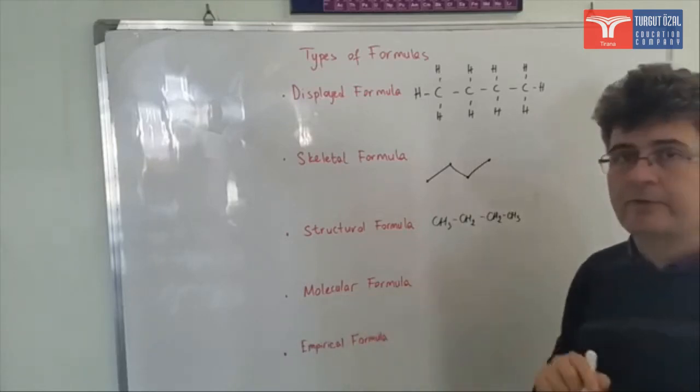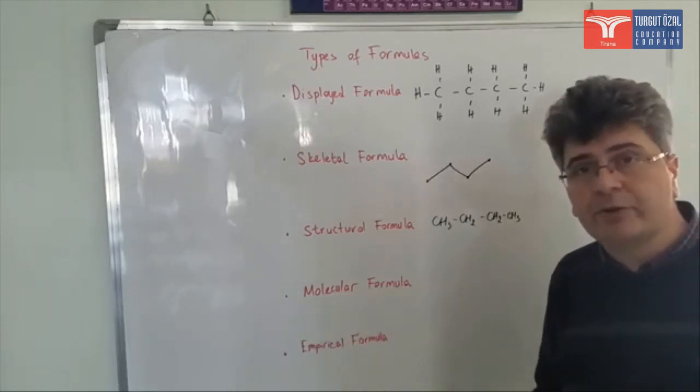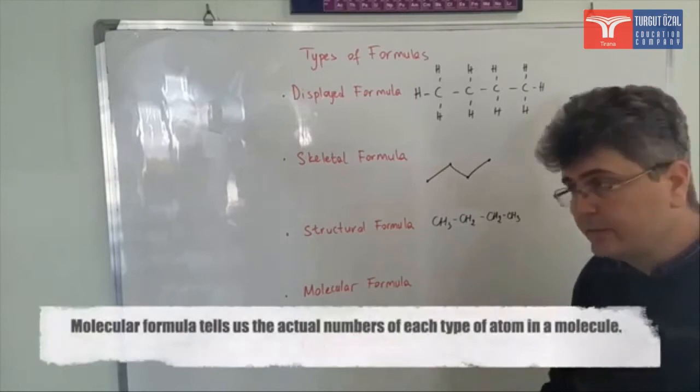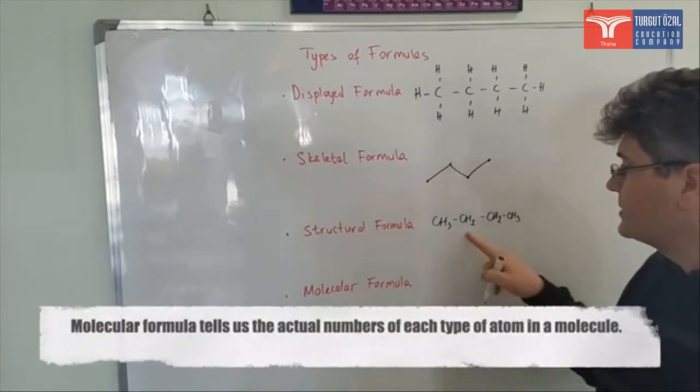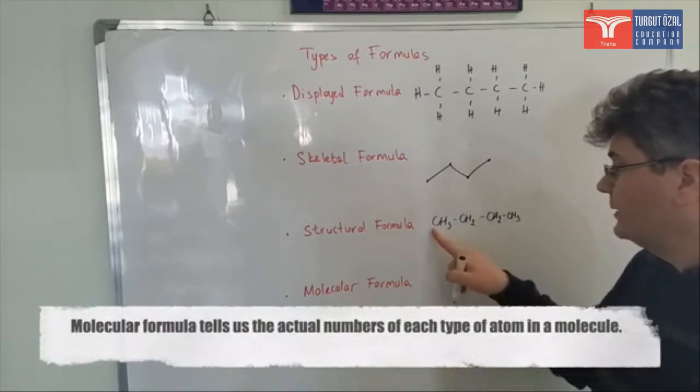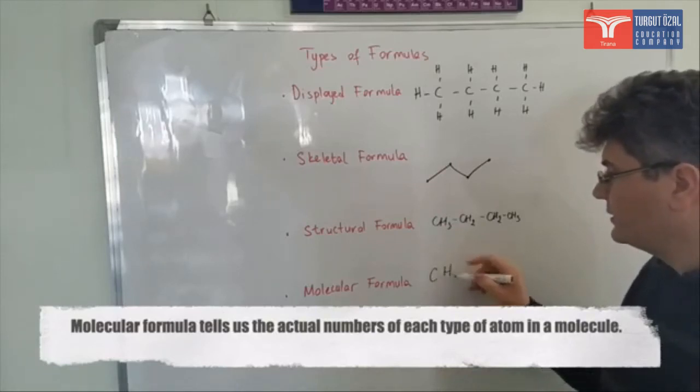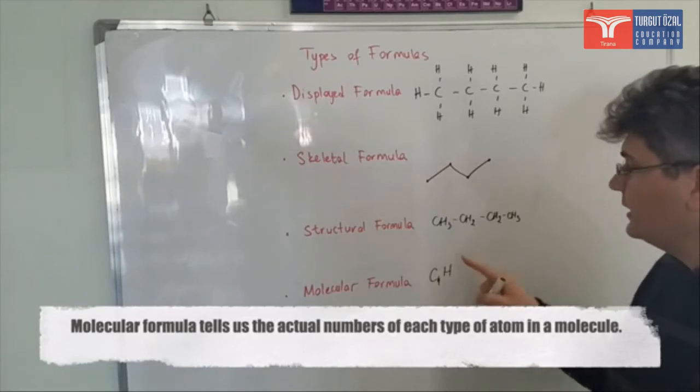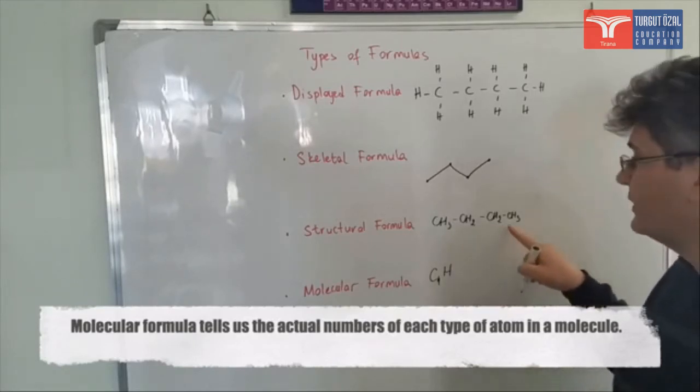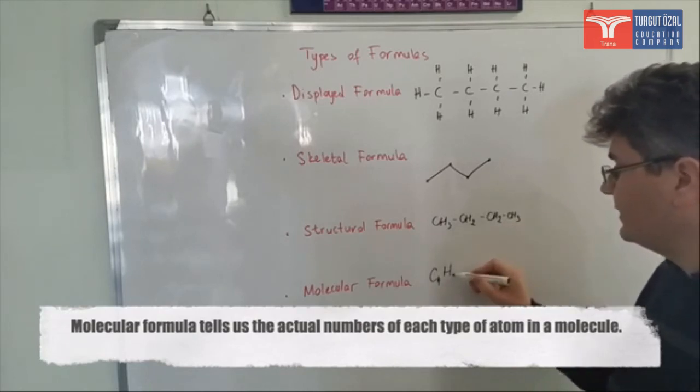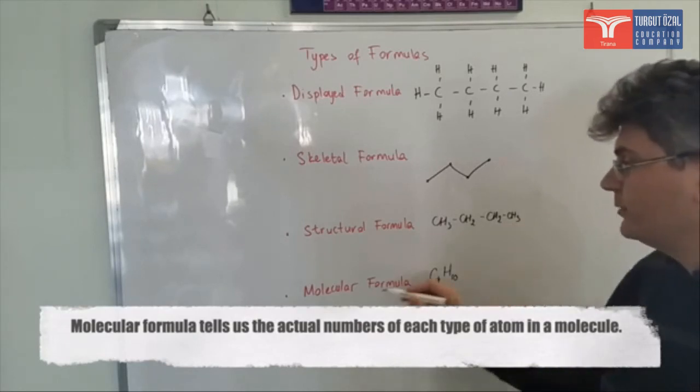Next one is the molecular formula. Molecular formula is showing the types of the atoms and the real numbers of the atoms. The types of the elements that I have are carbon and hydrogen. I have carbon and hydrogen. I do have four carbon atoms, so four carbons. And I have three plus two, five, plus two, seven, plus three, ten, ten hydrogen atoms. This is my molecular formula.